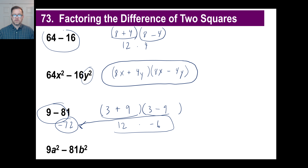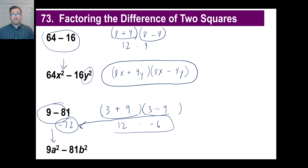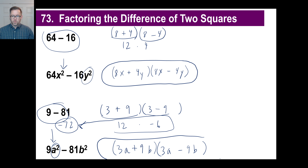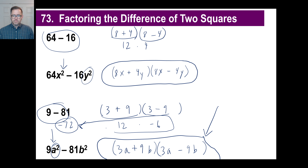They won't give you pure number problems like that in the book — we'll focus on the algebraic ones. But if you know how to do 9 minus 81 that way, then doing 9a² minus 81b² is exactly the same thing — you're just adding the a and the b. The square root of 9 is 3; put that twice with a plus and a minus. The square root of 81 is 9. The square root of a squared is a, and the square root of b squared is b. That's it.